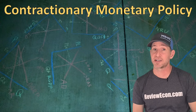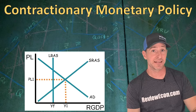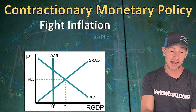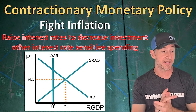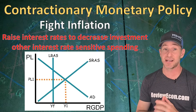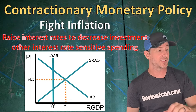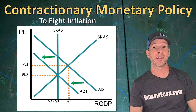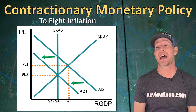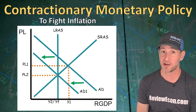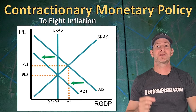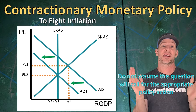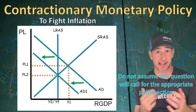For contractionary monetary policy, in an AS-AD model showing an inflationary gap, monetary policy leads to higher interest rates, which decrease gross investment and other interest-rate-sensitive spending, shifting aggregate demand to the left. That causes a decrease in real output, increasing unemployment, but produces a lower price level that eases inflationary pressures. One exam note: do not assume a question calls for the appropriate policy action — there's always a chance a question will ask for a policy action that would actually make economic problems worse.